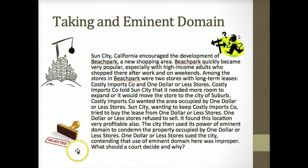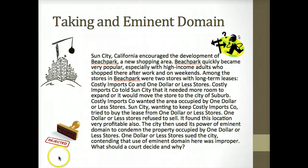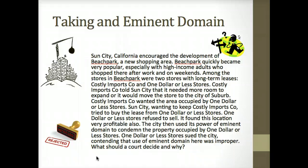On the slide, I have a stamp that says 'rejected,' and what that stamp means is that the city's exercise of its power of eminent domain was wrong and should be rejected. Now, this case is based loosely on the Kelo case — Kelo v. City of New London — and that is a case worth looking up in more detail because it talks about what constitutes a public purpose and what doesn't. That was a Supreme Court case decided about six years ago, and it's a case to look at and compare it to what this case is like.